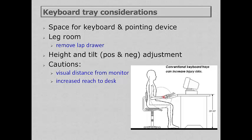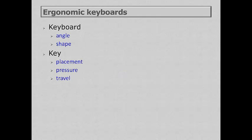Keyboard trays are commonly used. If you use one, think about space for both keyboard and pointing device. If a person is using a lap drawer, there may not be enough leg room, so you may need to remove it to mount the keyboard tray. When adding a keyboard tray to an existing workstation, try to get one with both height and tilt adjustments. Keep in mind that a keyboard tray will push you a little further away from your monitor and increase the reach to your desk.